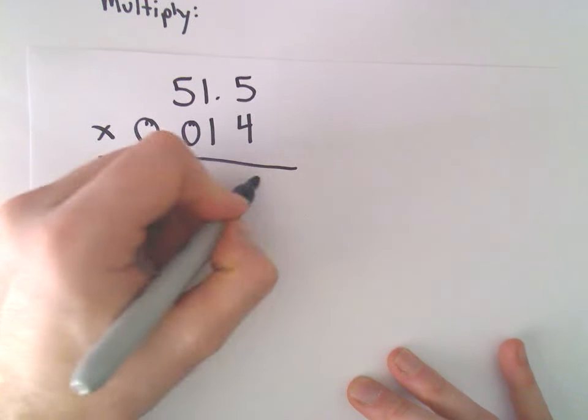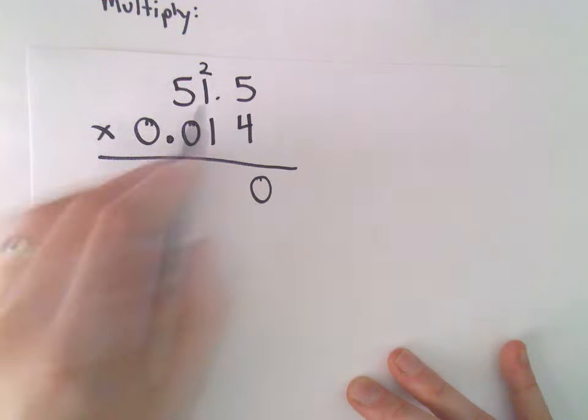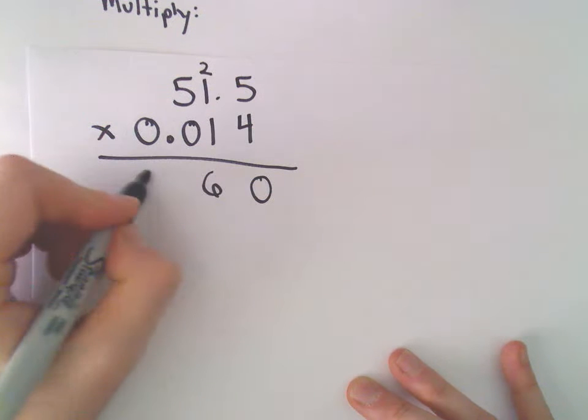4 times 5 is going to be 20, so I'm going to drop down the 0 and carry the 2. 4 times 1 will be 4, plus 2 will be 6, and then 4 times 5 will be 20.